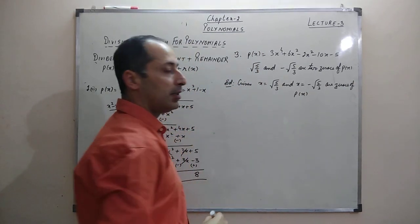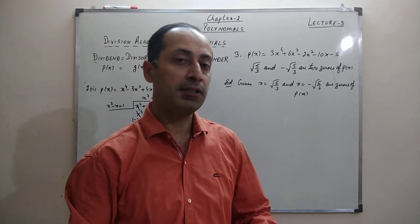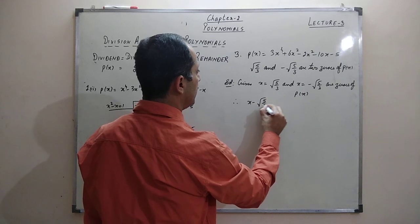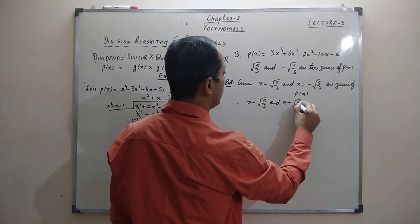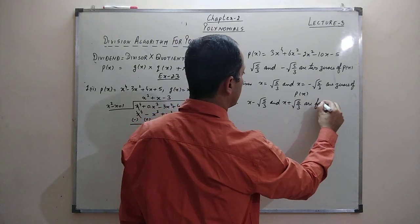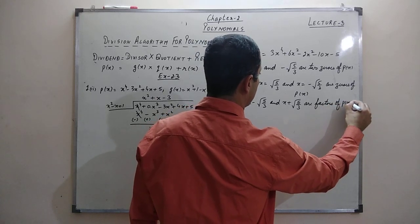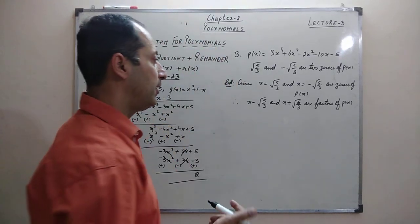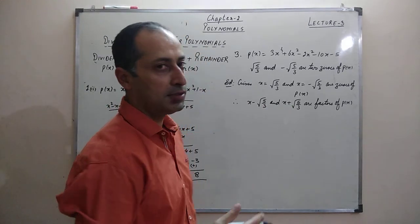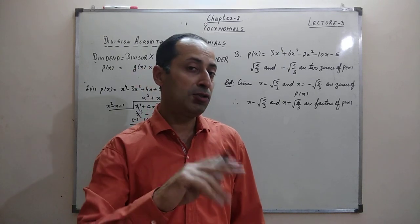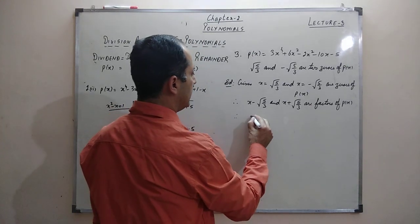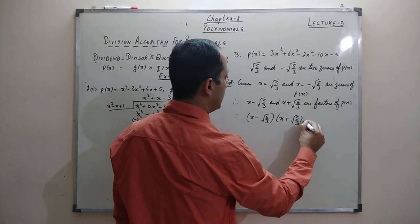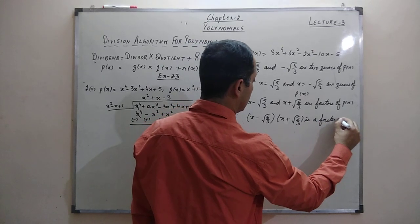Since x = √(5/3) and x = -√(5/3) are zeros of p(x), if x = a is a zero of a polynomial then x - a is a factor. Therefore x - √(5/3) and x + √(5/3) are factors of p(x). Since both are factors, their product is also a factor — just like 2 and 3 are both factors of 12, so 2×3=6 is also a factor. Therefore (x - √(5/3))(x + √(5/3)) = x² - 5/3 is a factor of p(x).